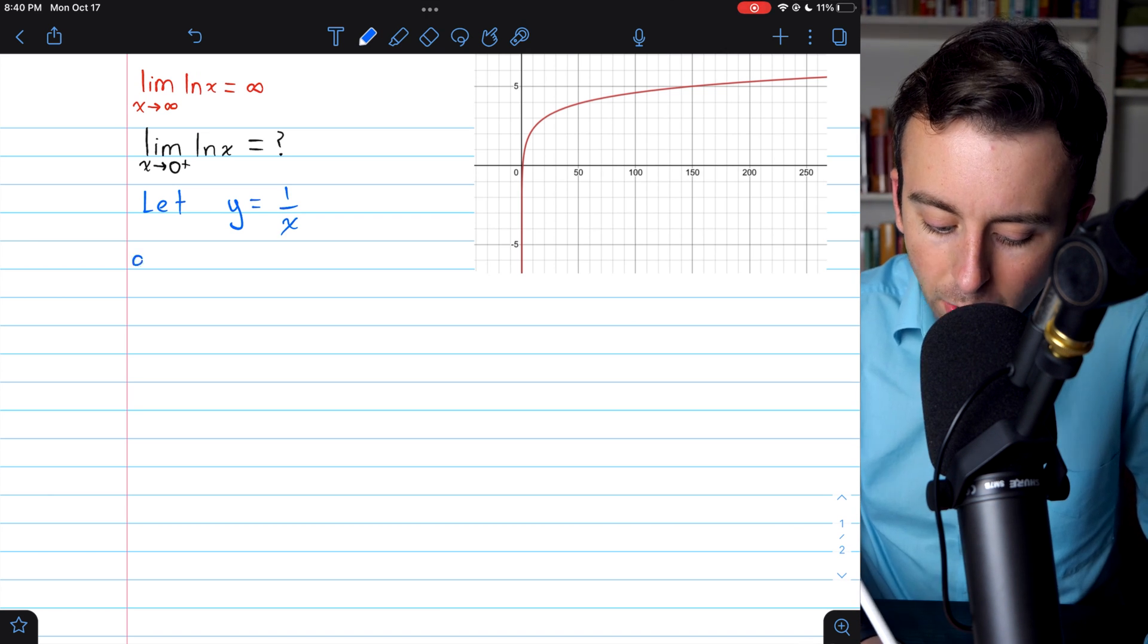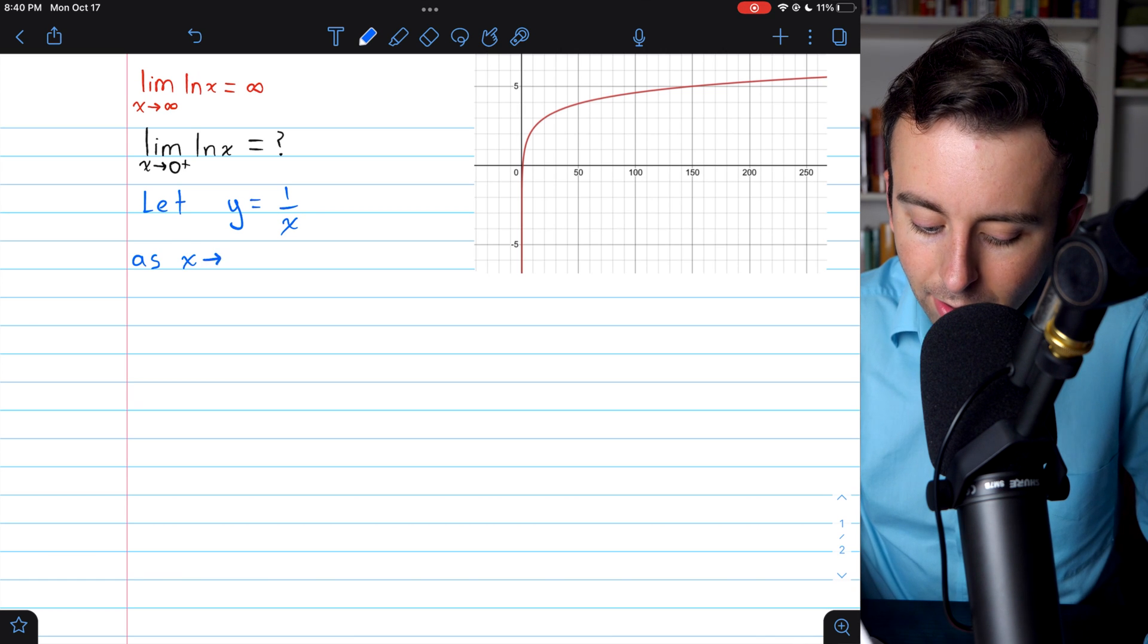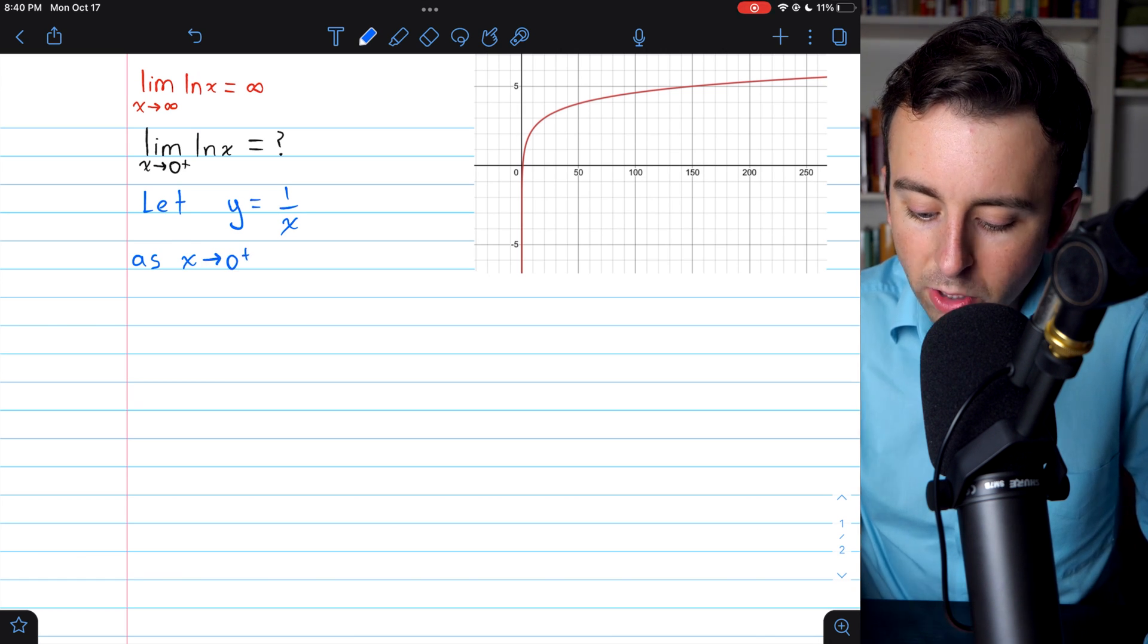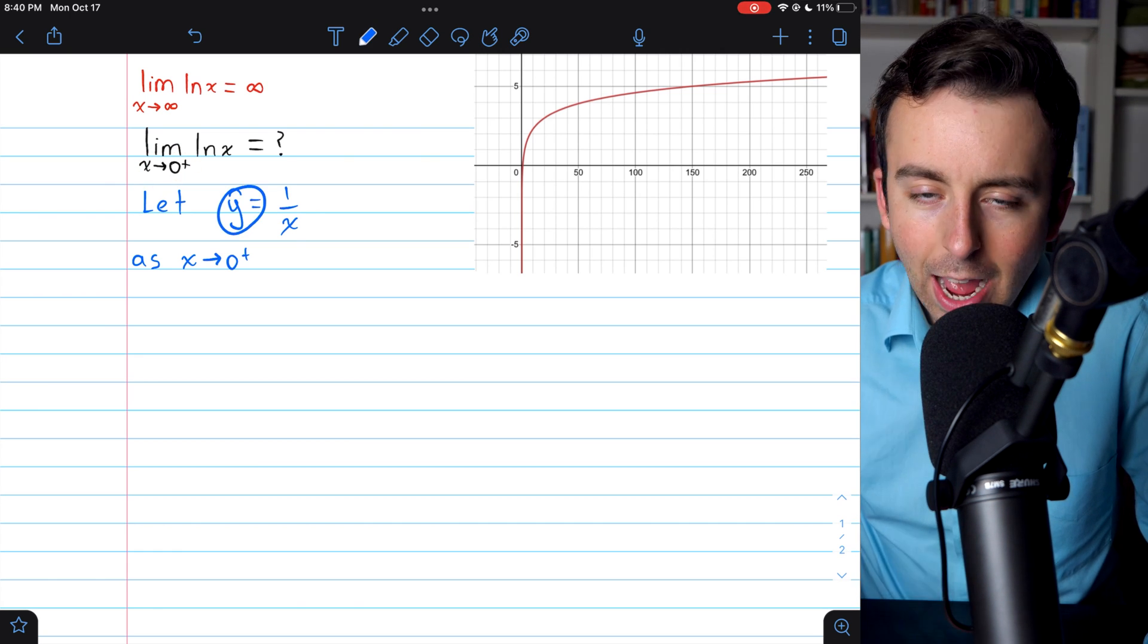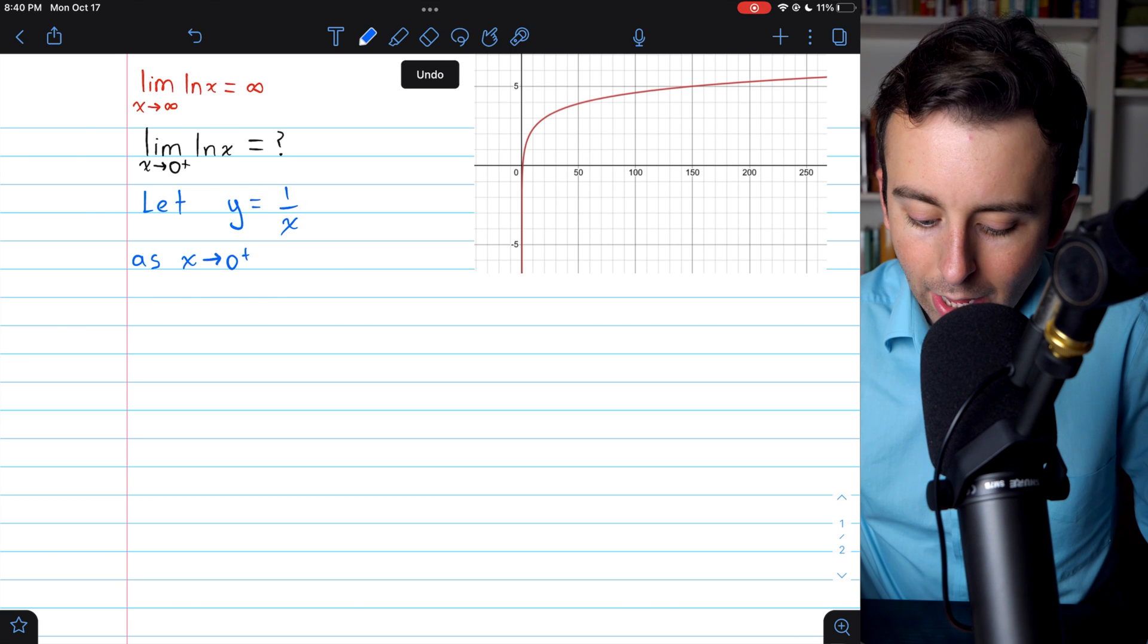What we need to notice is that as x approaches 0 from the right, which is what's happening in our limit, what's going to happen to y?